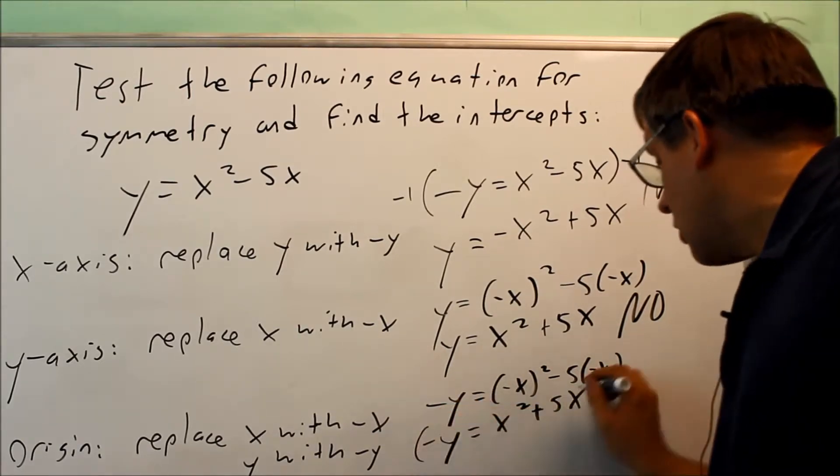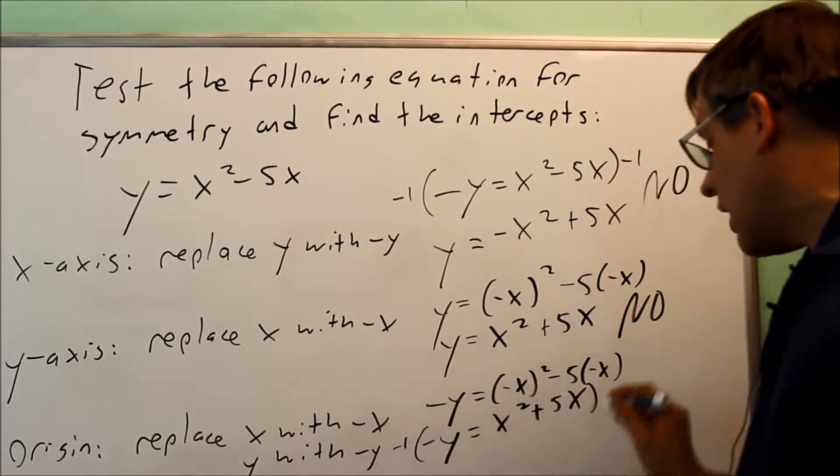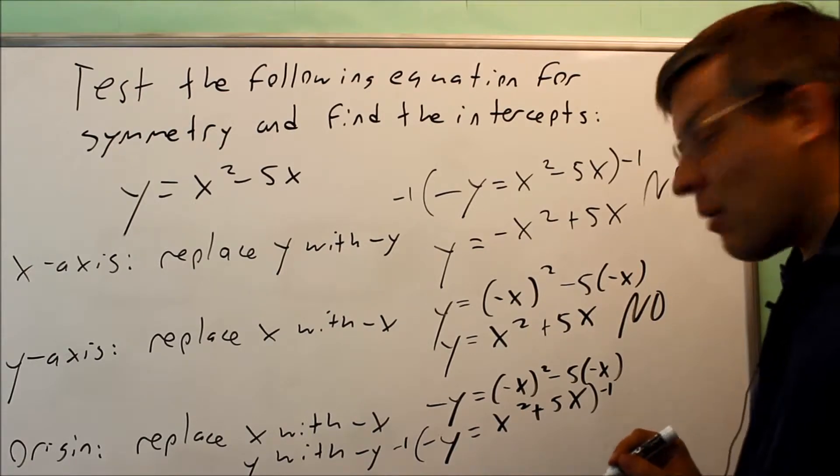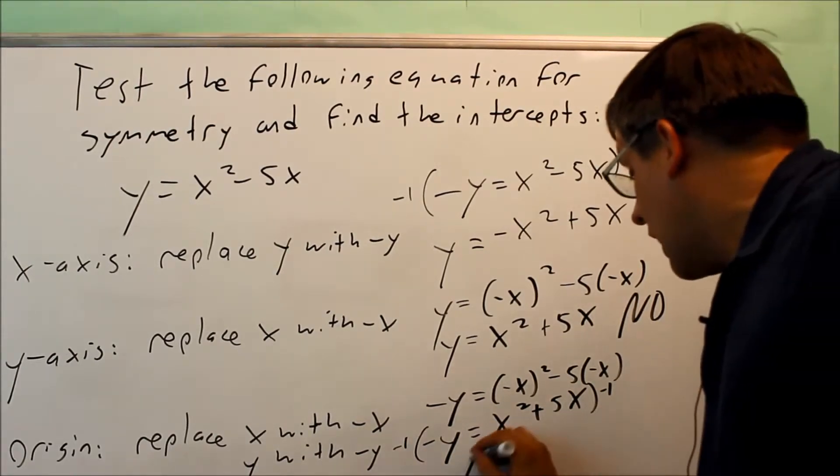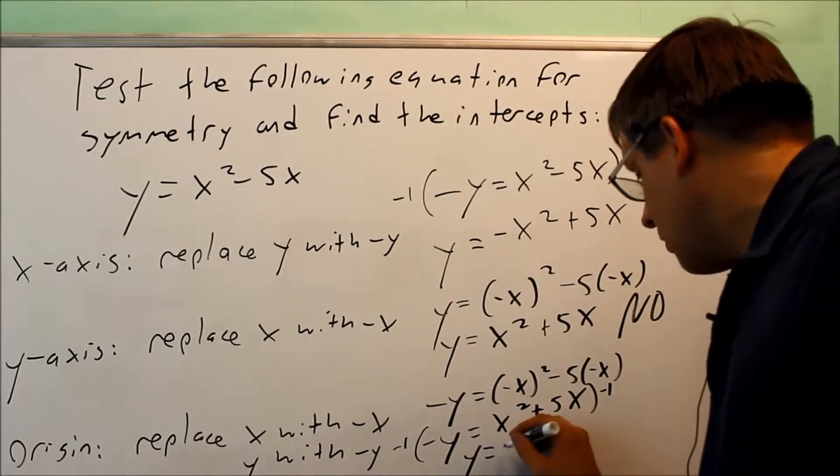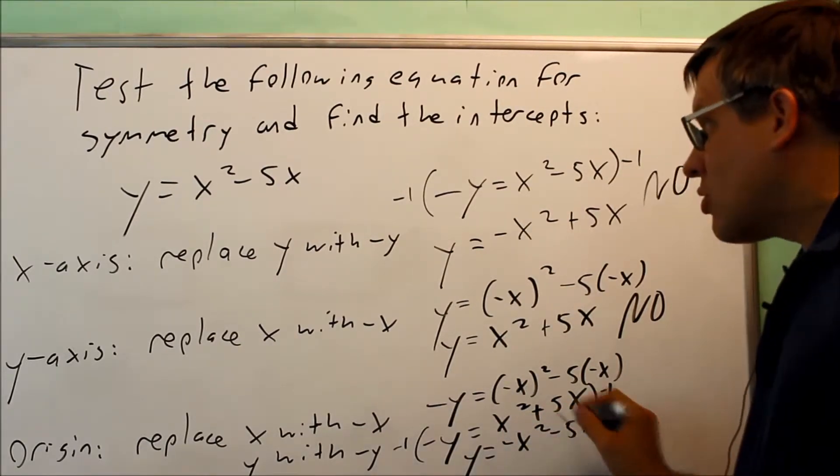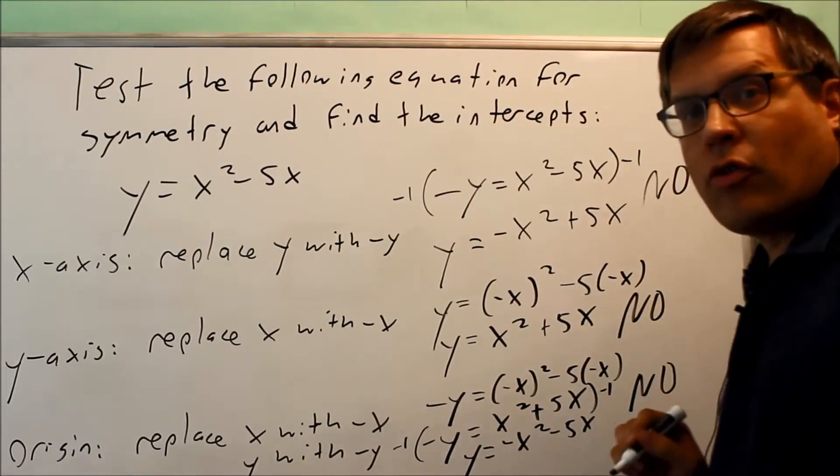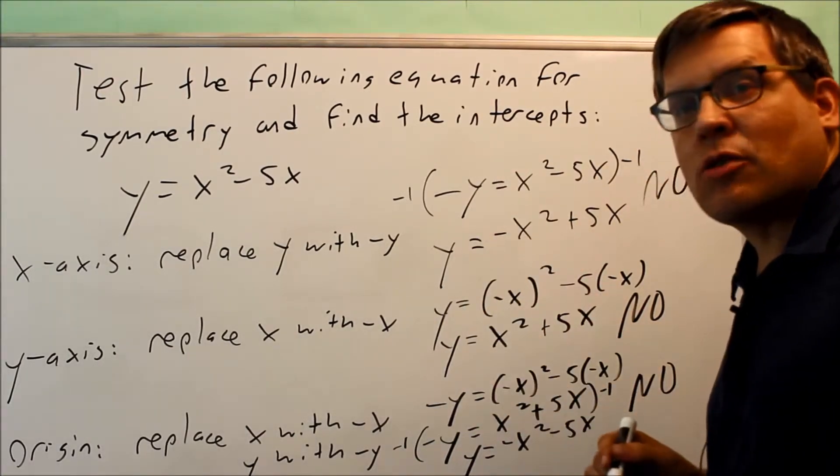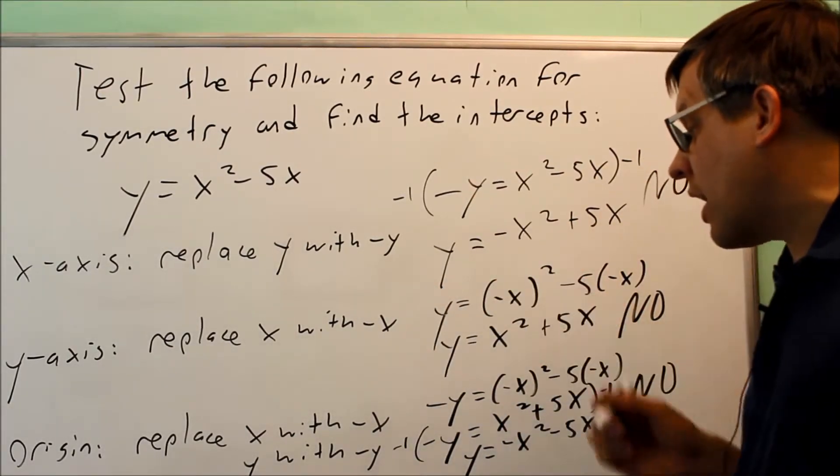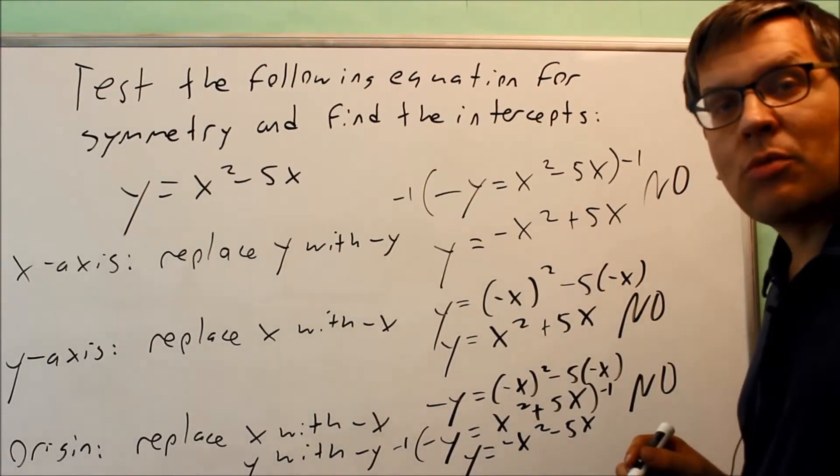Multiplying both sides by -1 gives y = -x² - 5x. That's not the same as the original equation either. Therefore, it doesn't have any of these three symmetries: no x-axis, no y-axis, and no origin symmetry.